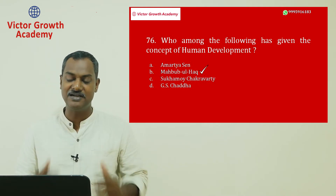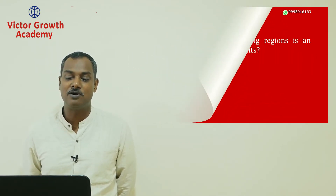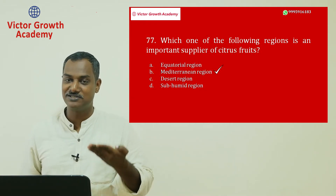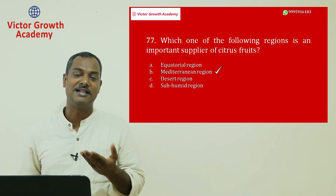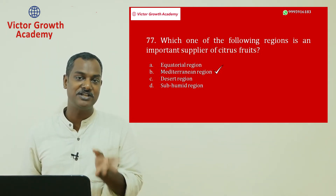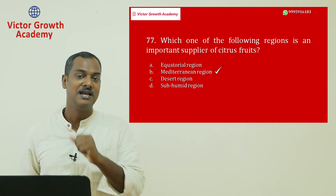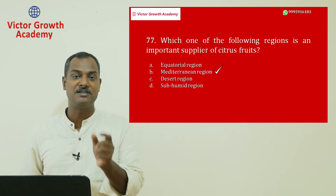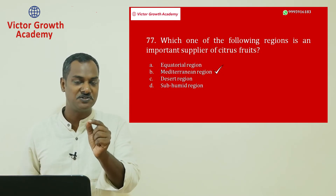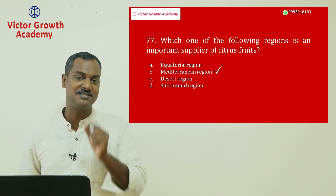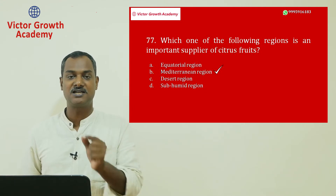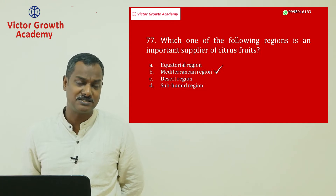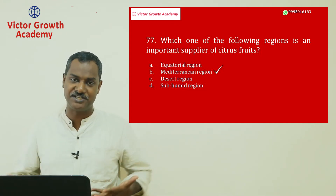Question number 77: which region is an important supplier of citrus fruit? The questions seem to be taken from the same page consecutively. Citrus fruits are associated with Mediterranean climate — not equatorial, which is more suited to plantation crops. Mediterranean climate features oranges, olives, figs, and viticulture (wine-making). Desert regions have only dates.